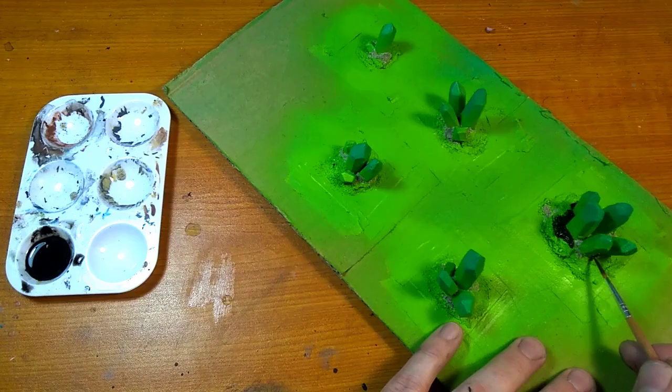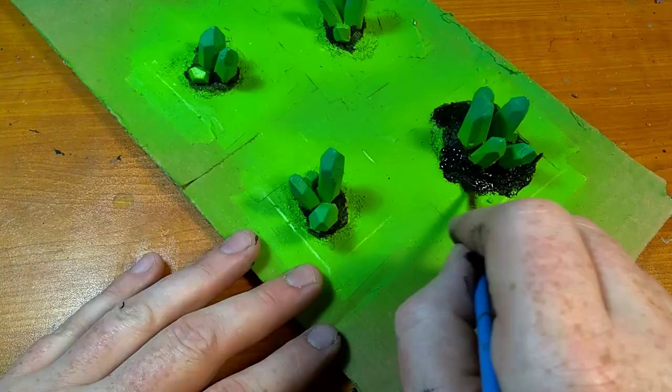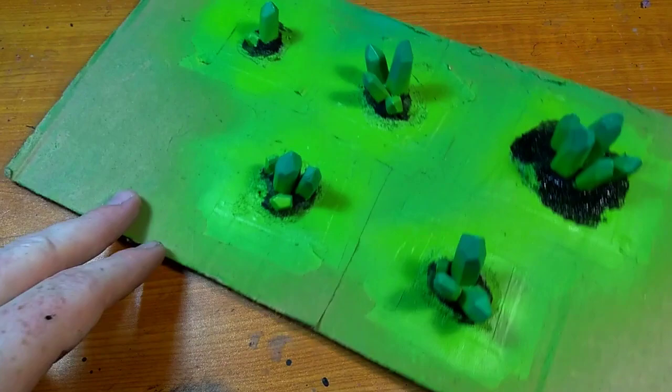After going around all the crystals I use a slightly larger brush to slop on some thicker black paint. This thicker coat will help keep the sand in place and prevent the PVA glue from reactivating.